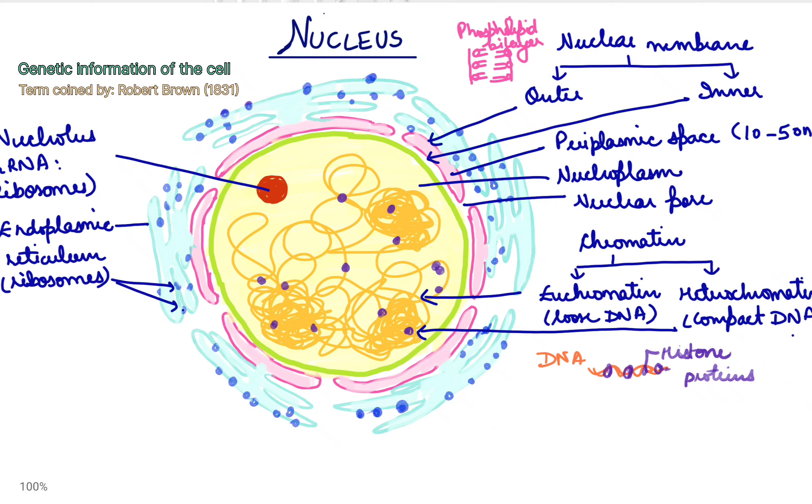The nuclear lamina, made up of lamins and intermediate filaments, is involved in chromatin organization, cellular development, and differentiation.